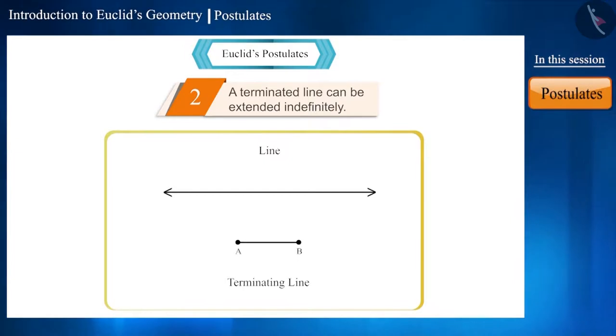According to Euclid's postulate, a line segment can be extended indefinitely. That is, it can be seen as a line by extending it from a small line segment to a larger line segment. This means a small line segment can be converted into a line.